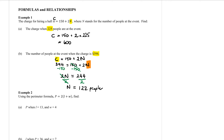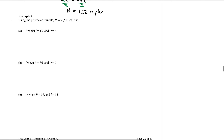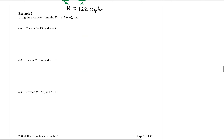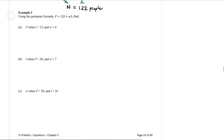So this is using formulas and equations to help us find pronumerals. Let's look at example number 2. Using the perimeter formula p equals 2 bracket l plus w, find the perimeter when l equals 13 and w equals 4.